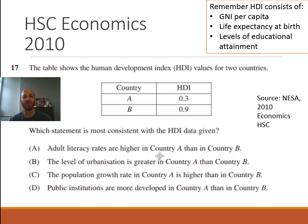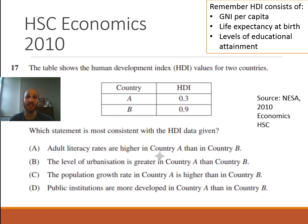The table shows the HDI values for two countries, Country A and Country B. On the face of it, we can see that Country B has a higher HDI — greater levels of human development and greater levels of economic development.